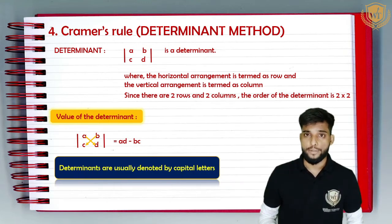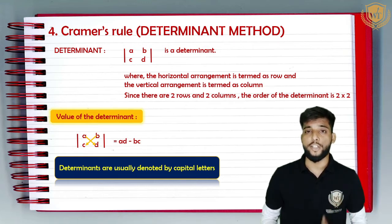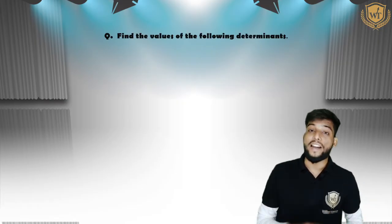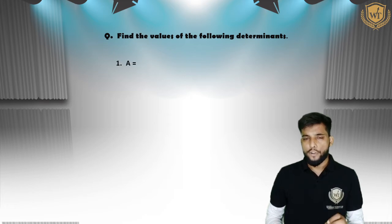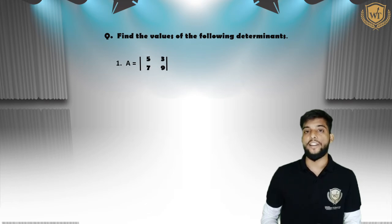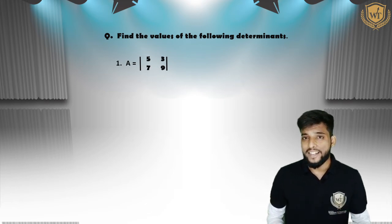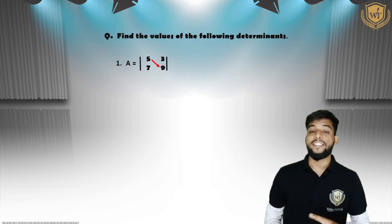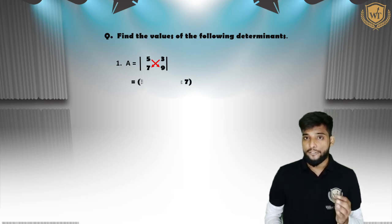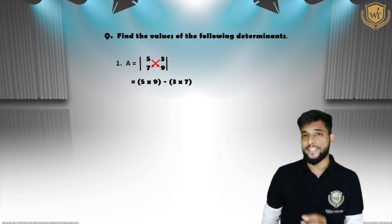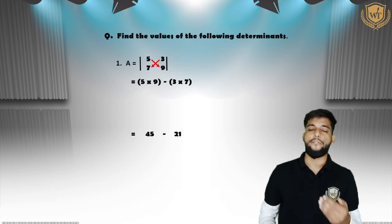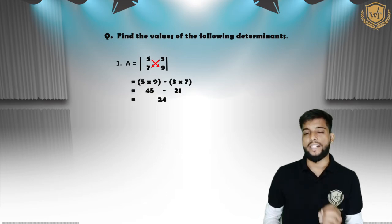Remember: determinants are always denoted by capital letters. Let us take some examples. The first determinant A has elements 5, 3, 7, 9. So 5 will be multiplied to 9 and 3 will be multiplied to 7, separated by a minus sign: 5 into 9 minus 3 into 7. Five nines are 45, three sevens are 21, so we have 45 minus 21, which is 24. The value of determinant A is 24.